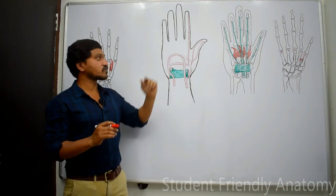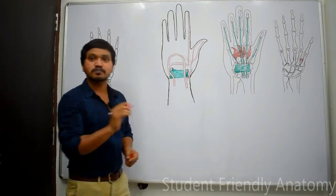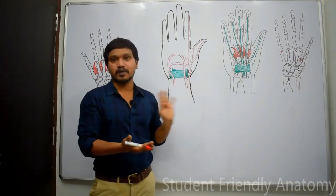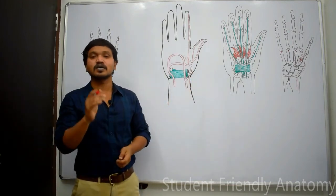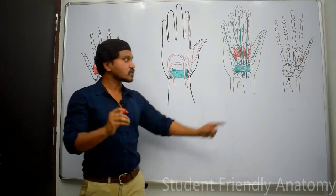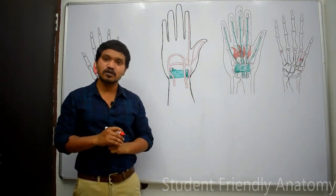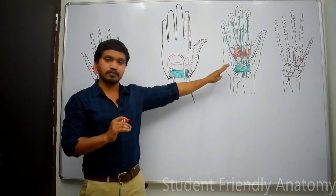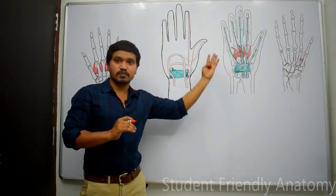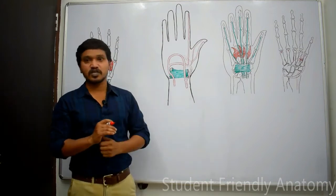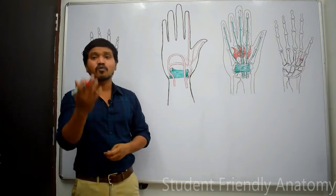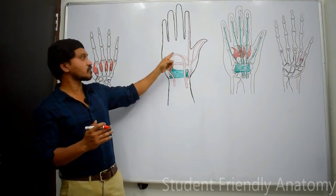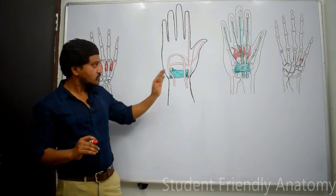The superficial palmar arch lies between the palmar aponeurosis superficially, and the long flexor tendons (flexor digitorum profundus and superficialis) and lumbricals deeply. Digital nerves also lie deep to the superficial palmar arch. Removal of the palmar aponeurosis reveals the superficial palmar arch.